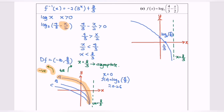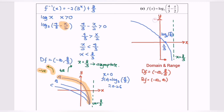Now we discuss the domain and range. Based on the diagram, the domain is negative infinity to 8/3, where 8/3 is not included. Referring to the values of y, the range is negative infinity to positive infinity — the minimum value of y is negative infinity and the maximum is positive infinity. So here we are, and thanks for watching.